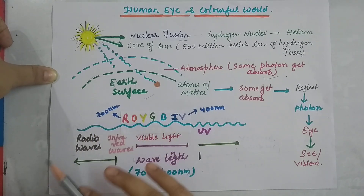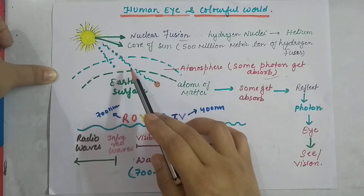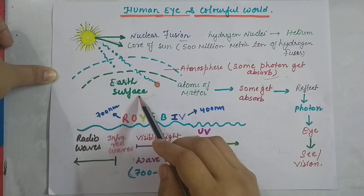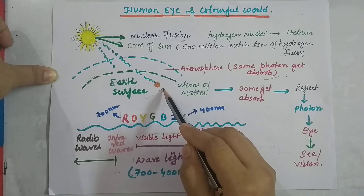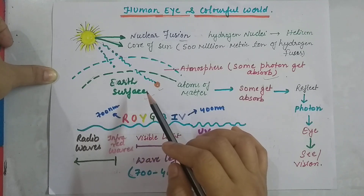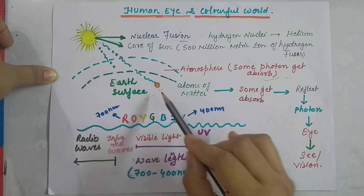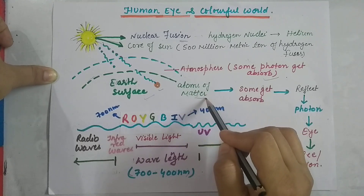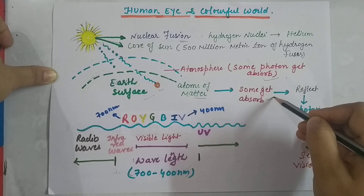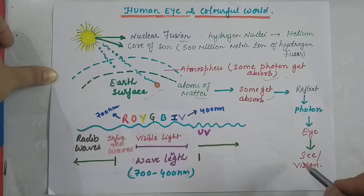There are different colors you can find in the atmosphere due to light absorption — we will discuss that later. These photons in the form of electromagnetic waves reach the atoms of matter. We know that everything on the earth's surface is made up of atoms. These light rays get absorbed by the atoms, and some of the photons get absorbed while some get reflected. When the reflected photons come into our eyes, we are able to see things.